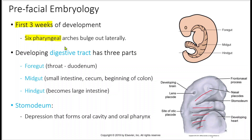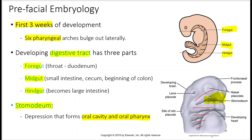Within this same time, in the first three weeks, we'll have a developing digestive tract — a foregut, midgut, and hindgut. We also have the stomodeum, which is where the oral cavity would appear. You can start to recognize the eyes, nose, and mouth forming, along with the maxillary arch and the mandibular arch, all coming from those pharyngeal arches.